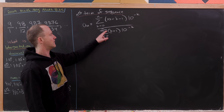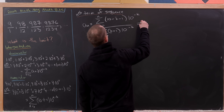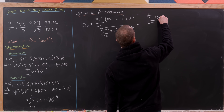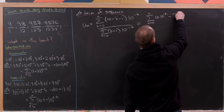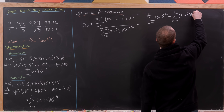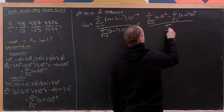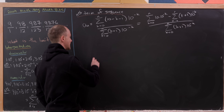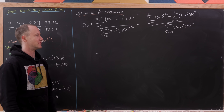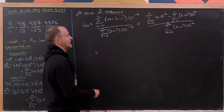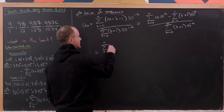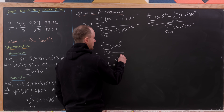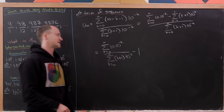Now observe that part of the denominator sum is inside the numerator. The numerator becomes the sum of 10 times 10 to the minus k minus the sum of k plus 1 times 10 to the minus k, all over the sum of k plus 1 times 10 to the minus k. The second piece of the numerator equals the denominator, so it cancels out, leaving the sum of 10 times 10 to the minus k over the sum of k plus 1 times 10 to the minus k, minus 1.